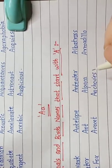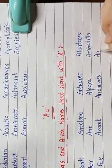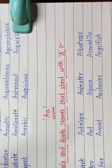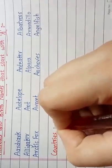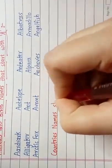Avocet, anchovies, angelfish. Now next we are going to see the country's names that start with letter A.